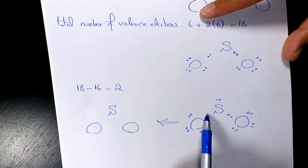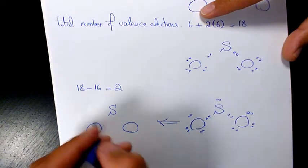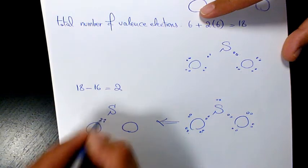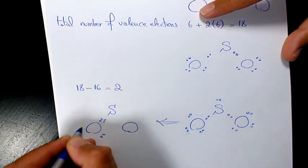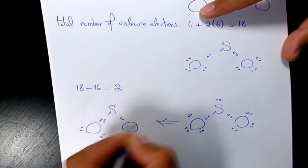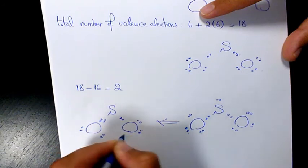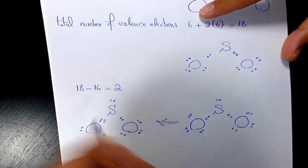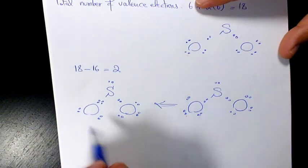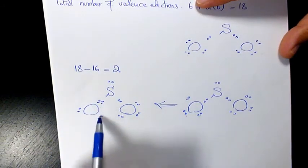So what we need to do is move one of these lone pairs to the middle and make it as a bonding pair, so we have a double bond between sulfur and one of the oxygens.